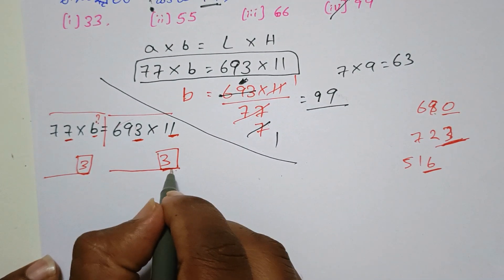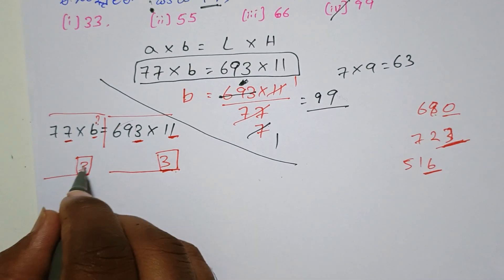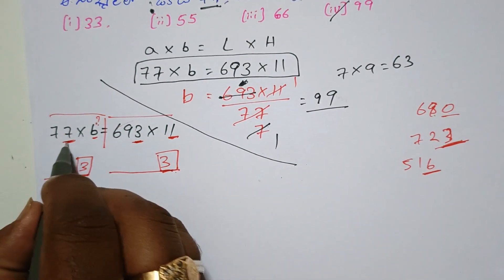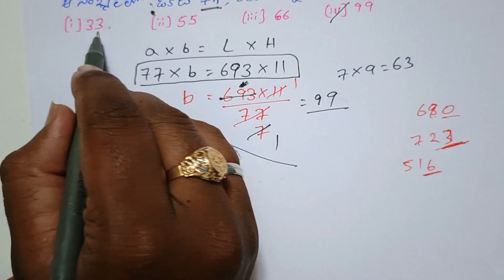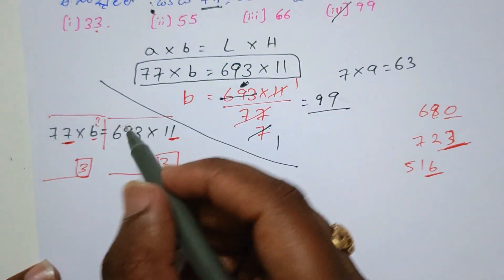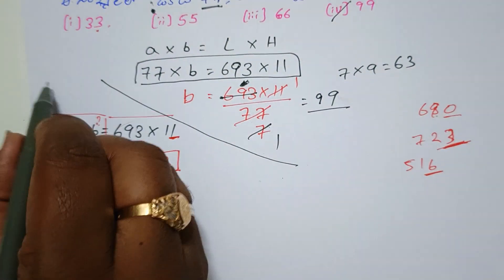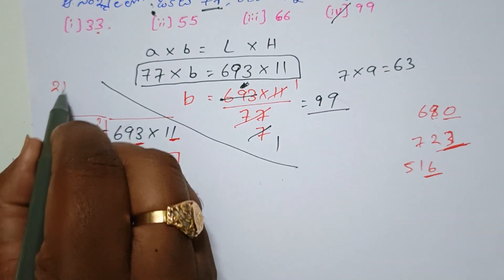We have 3 here and 7 here. The number of 7 multiplied gives us the result. Number 7 and number 3 multiply together. You can see the number 21 for reference.